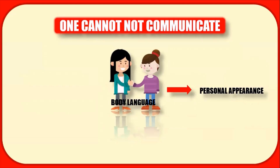Now let us go on to posture — the way we sit, stand, or walk in a particular situation. For example, a person addressing an audience for the first time will be nervous and may unknowingly pace up and down or fidget with a pen. This may not be the case with someone who is comfortable addressing audiences regularly and is therefore calm and relaxed.